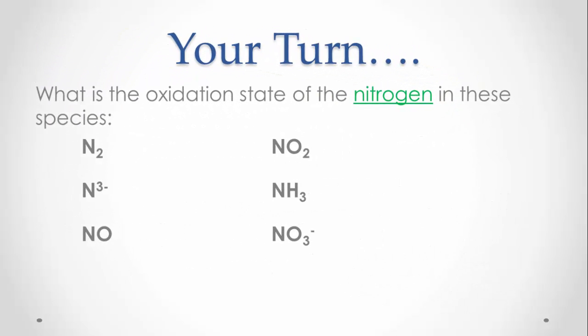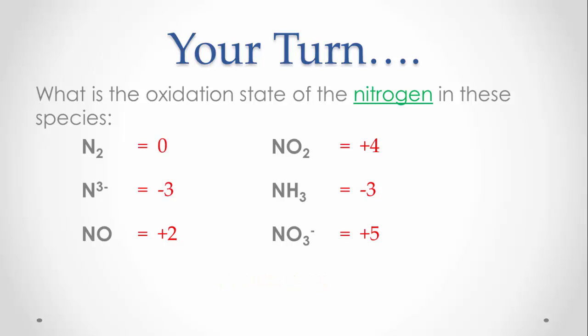Now it's your turn. Try working out the oxidation state of the nitrogen atom in each of these examples. Go back and review the six rules and apply them. Pause the video now and replay to see the answers. How did you get on?